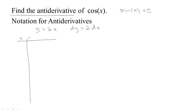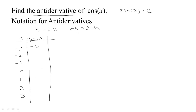Let's write out some values for this function. We're going to have some x values and then the y values will be given by 2x. For x values negative 1, 0, 1, 2, 3, the corresponding y values are negative 6, negative 4, negative 2, 0, 2, 4, 6. Now let's look at the tiny changes in that function.